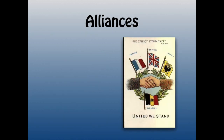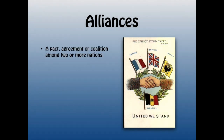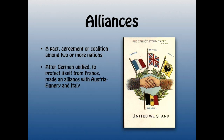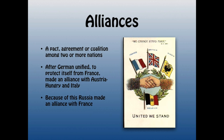Let's look at alliances. An alliance is a pact or agreement or coalition among two or more nations. After Germany unified, to protect itself from France it made an alliance with its ethnic cousin Austria-Hungary, and it also made an alliance with Italy. But Italy never really has any major role in World War I or World War II — so this is probably the last time you'll hear me talk about Italy. Because of this alliance, Russia got scared and it made an alliance with France. And so it begins — all these alliances begin to be made and developed.